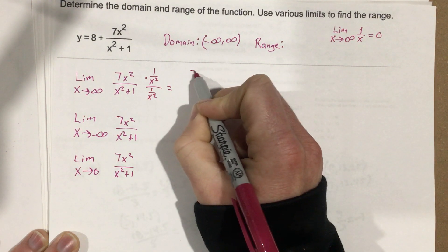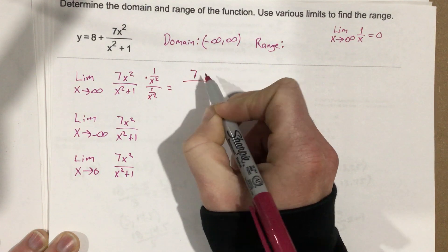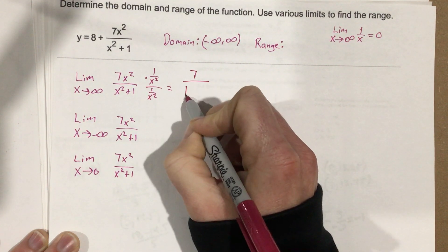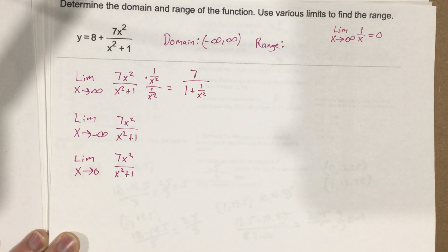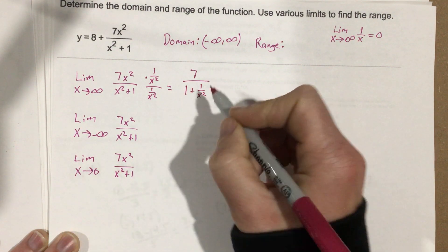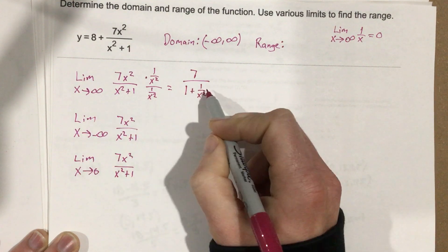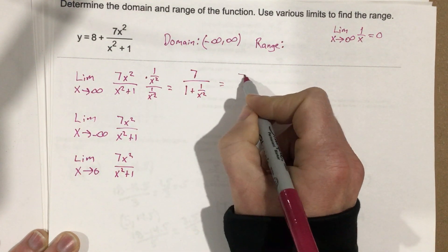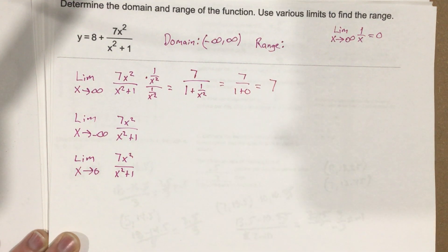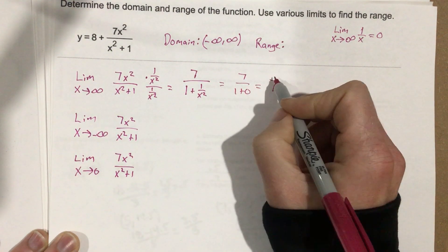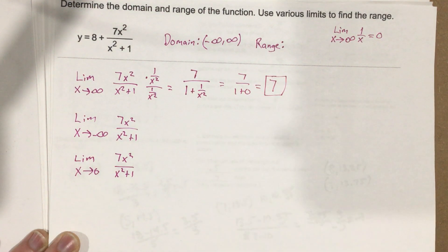That's going to give you 7 on top over, on the bottom you'll end up with 1 plus 1 over x squared. This is going to give you 0 when you take the limit of it. So you end up with 7 over 1 plus 0, which means you end up with 7 for your limit as x approaches infinity.